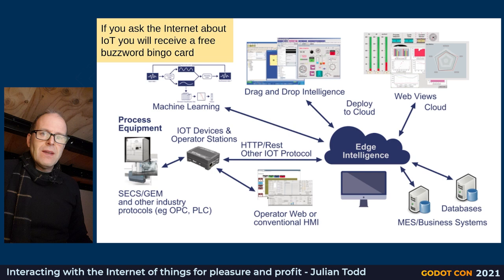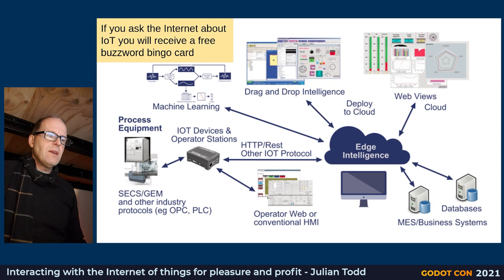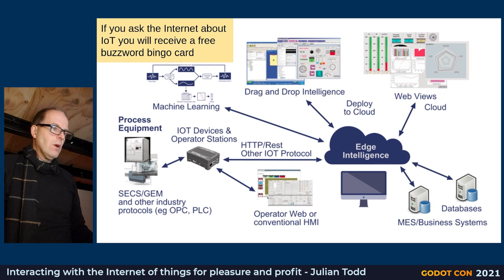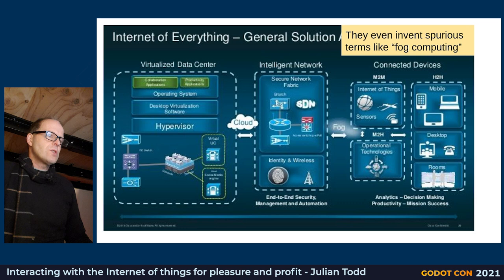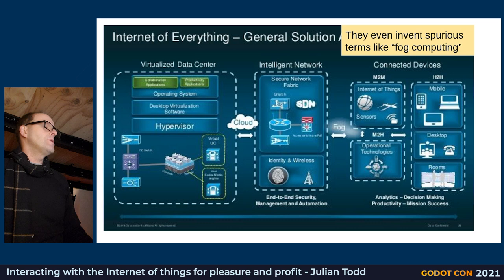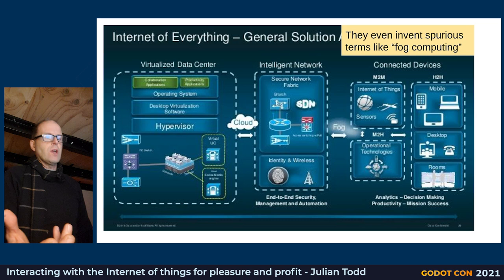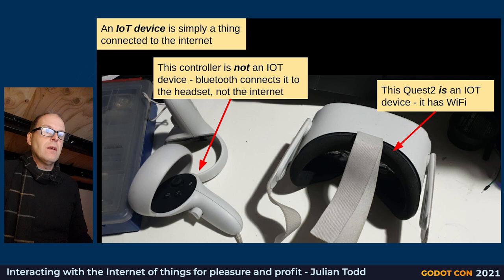If you look up the internet of things, you'll get a buzzword bingo card you can take to your next sales meeting and tick off all the words that don't mean very much. Usually they just tie the words together with lots of arrows and not much else, or show complex diagrams of the whole stack from sensors up to the cloud — which is just computing on a server — and then when it's not on the cloud they call it 'fog.' My definition is simply: it's a thing connected to the internet.